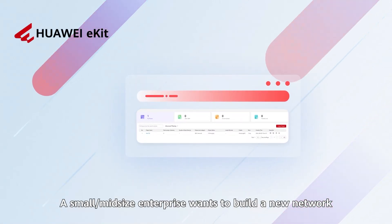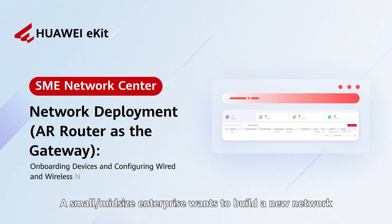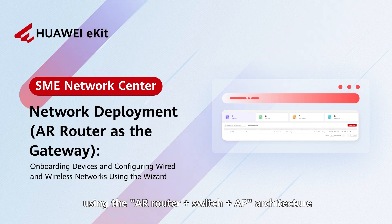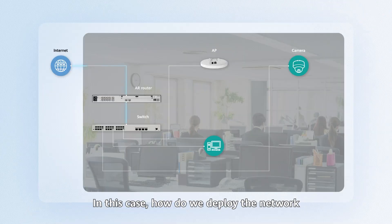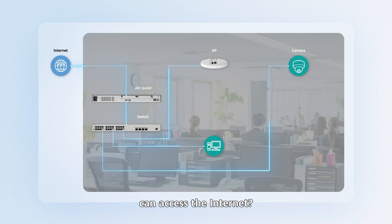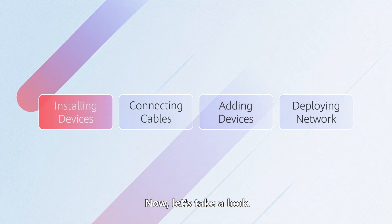A small or mid-size enterprise wants to build a new network using the AR router plus switch plus AP architecture, with only Huawei SME network products deployed. In this case, how do we deploy the network so that both wired and wireless terminals can access the internet? This involves four steps. Let's take a look.